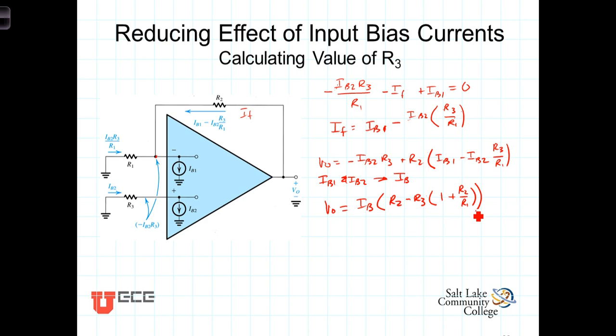All I've done is just replaced IB1 and IB2 with I sub B, factored out the I sub B, and then combined the terms involving R3. There's a term here with R3 and a term here with R3.